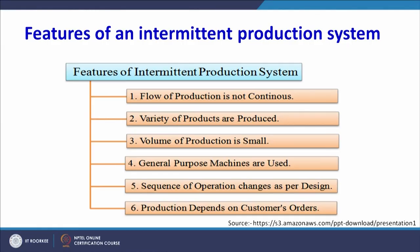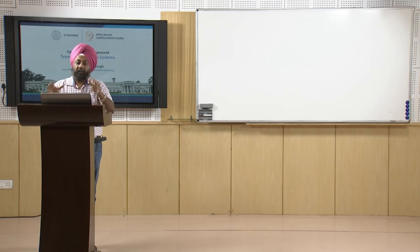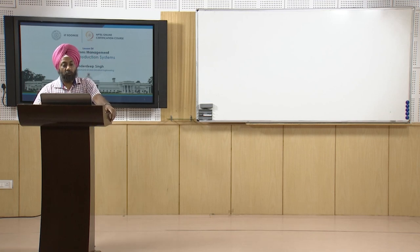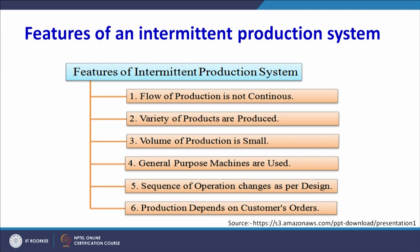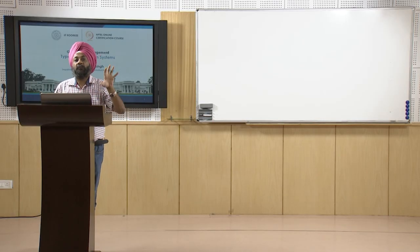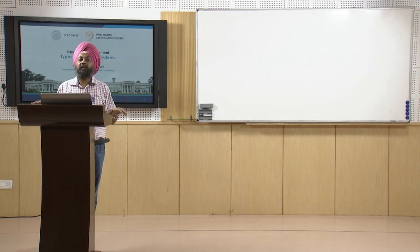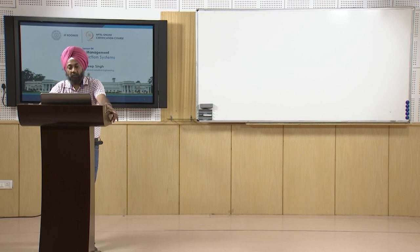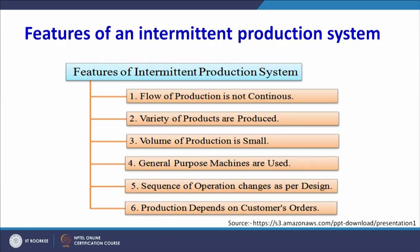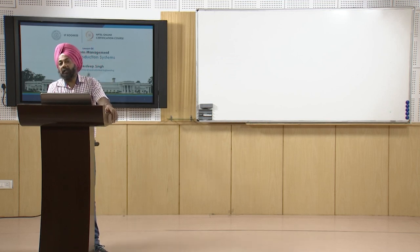Features of intermittent production systems: flow of production is not continuous; variety of products are produced; volume of production is small; general purpose machines are used because designs are changing continuously; and sequence of operations changes as per design — production depends upon customer orders.